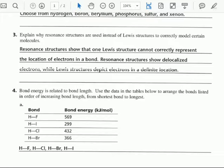Use the data in the tables below to arrange the bonds listed in order of increasing bond length, increasing bond length. So that means that we want the longest bond length to be last and the shortest bond length to be first. But notice,